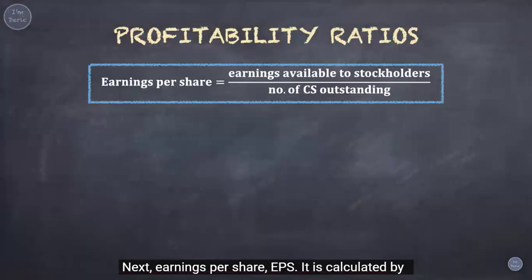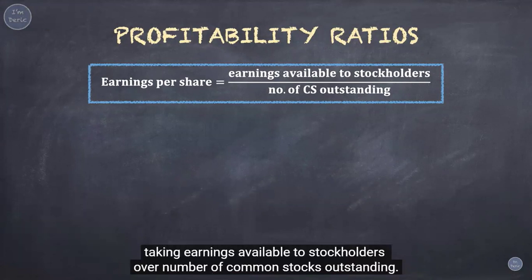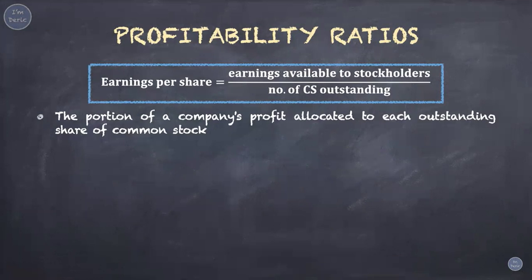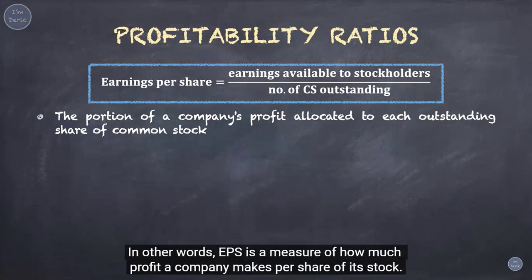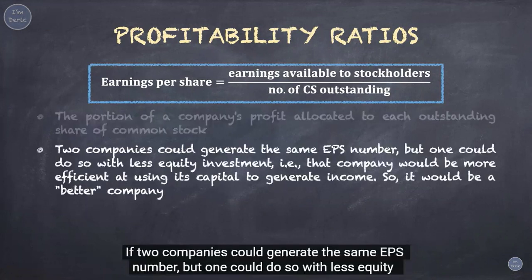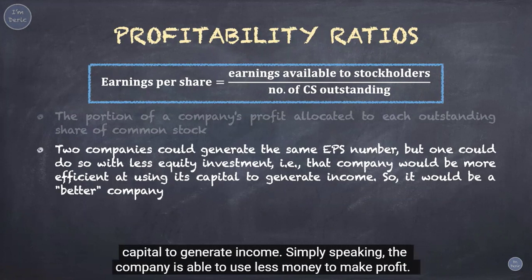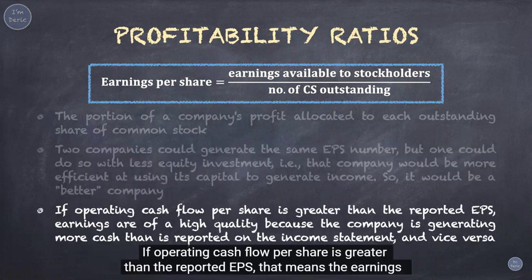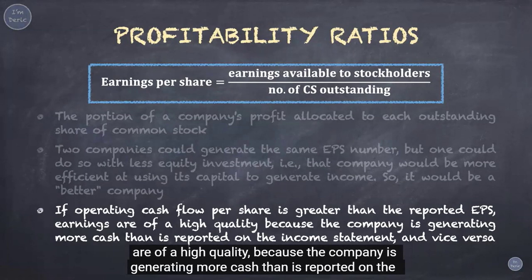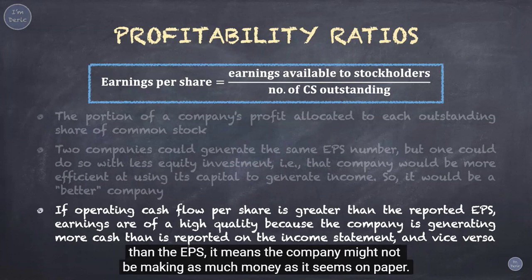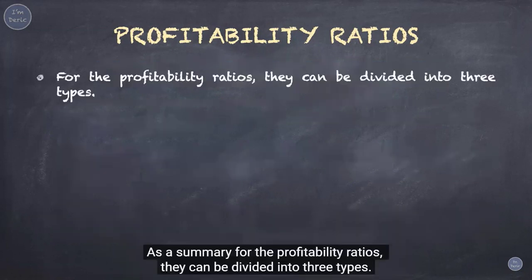Next, earnings per share (EPS) is calculated by taking earnings available to stockholders over number of common shares outstanding. EPS shows the portion of a company's profit allocated to each outstanding share — in other words, how much profit a company makes per share. If two companies generate the same EPS but one uses less equity investment, that company is more efficient at using its capital to generate income. If operating cash flow per share is greater than reported EPS, earnings are of high quality because the company is generating more cash than reported on the income statement. But if operating cash flow per share is lower than EPS, the company might not be making as much money as it appears on paper.